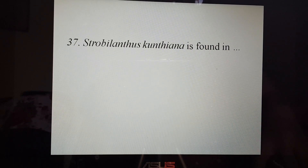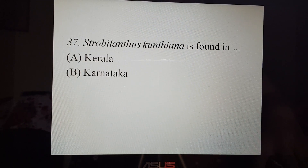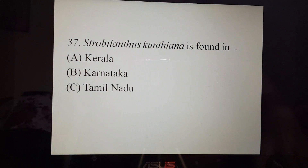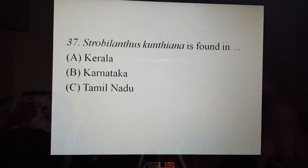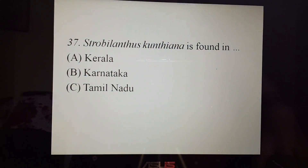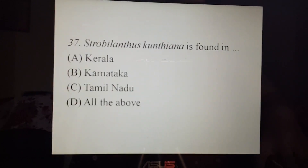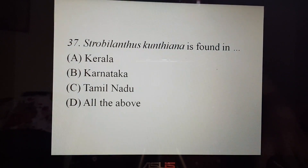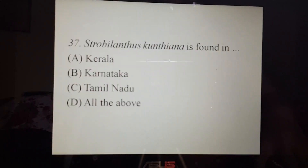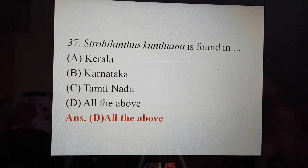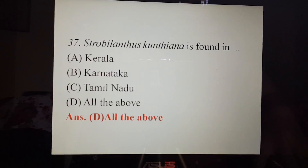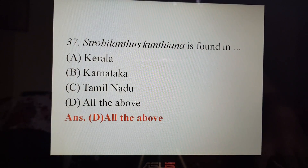Next, Strobilanthes kunthiana is found in: A. Kerala, B. Karnataka, C. Tamil Nadu, or D. All the above. It is found in option D, all the above. Strobilanthes kunthiana are present in Kerala, Karnataka and Tamil Nadu region.